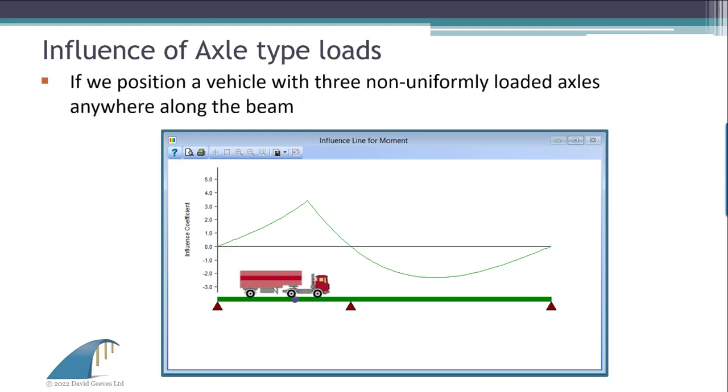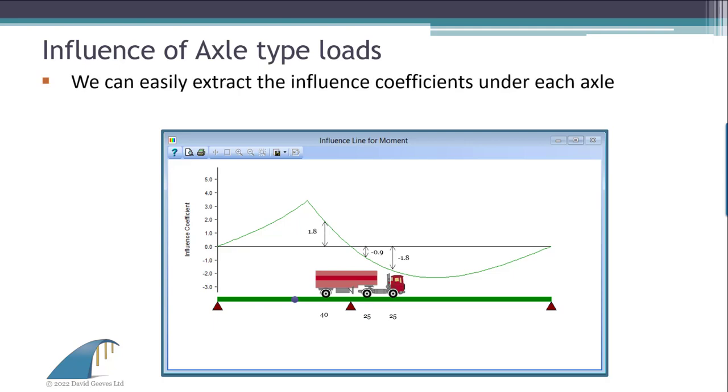Then consider a truck with three different axle weights and positions as it moves along the deck. At any particular position of the truck, the ordinates of the influence diagram at the axle locations are easily obtained.